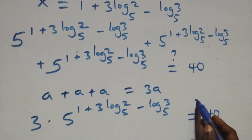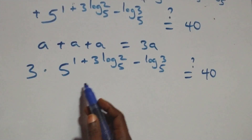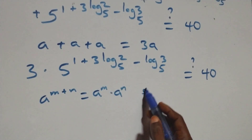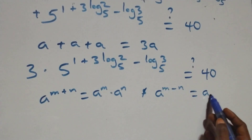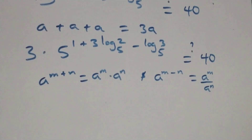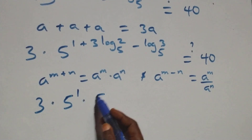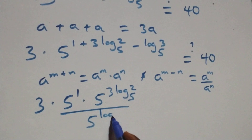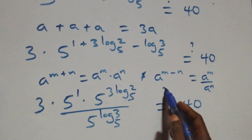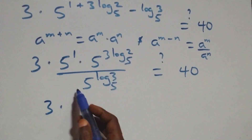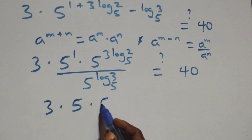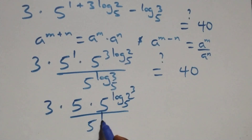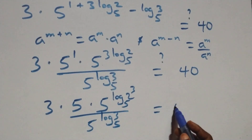Is this equal to 40? We apply the law of indices: a raised to power (m plus n) equals a^m times a^n, and a raised to power (m minus n) equals a^m over a^n. So we have 3 times 5^1 times 5 raised to power (3 log₅2) divided by 5 raised to power (log₅3), equals 40. That gives us 3 times 5 times 5 raised to power log₅(2³) over 5 raised to power log₅3, equals 40.